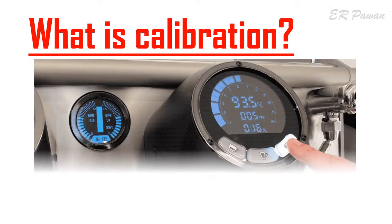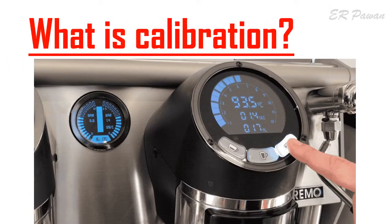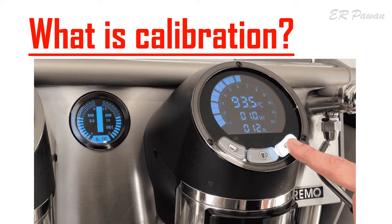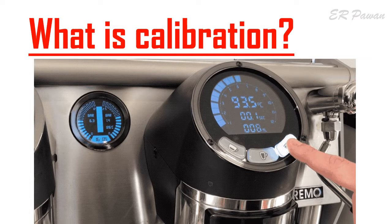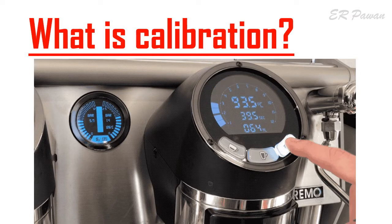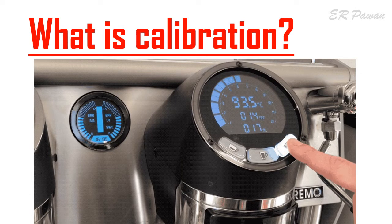What is calibration? In measurement technology, calibration is the process of checking the instrument with a standard instrument to improve the measuring functions. The accuracy of the standard device taken for calibration should be 10 times the accuracy of the measuring device.